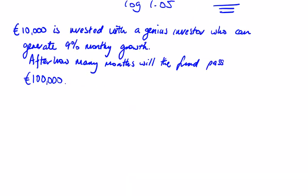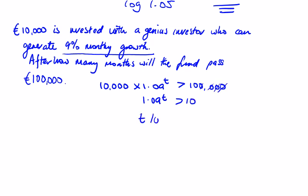In this question, €10,000 is invested with a genius investor who can generate 9% monthly growth. After how many months will the fund pass €100,000? So €10,000 by 1.09... we don't know t... has to be greater than €100,000. If I divide by €10,000, 1.09 to the power t has to be greater than 10. So t times the log of 1.09 has to be greater than the log of 10. So t has to be greater than the log of 10.